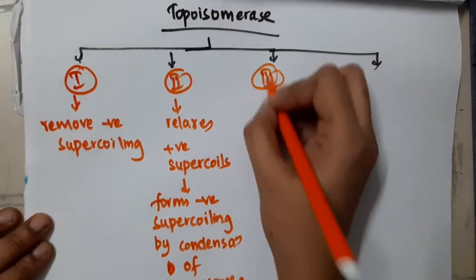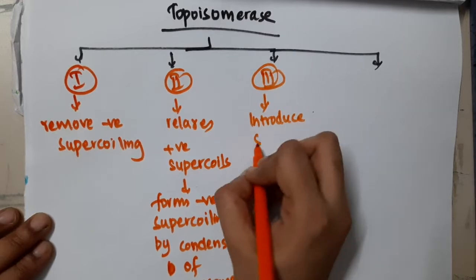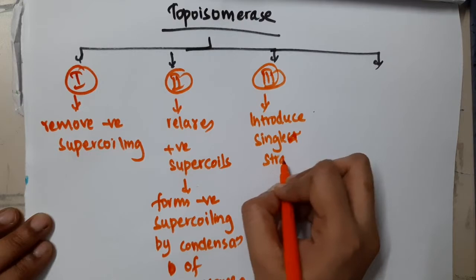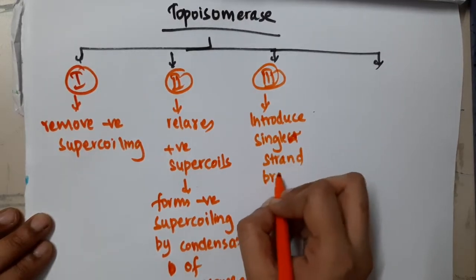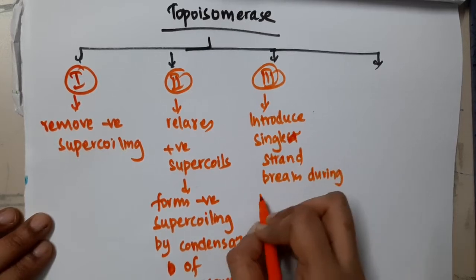Type 3 topoisomerase introduces single strand breaks during recombination.